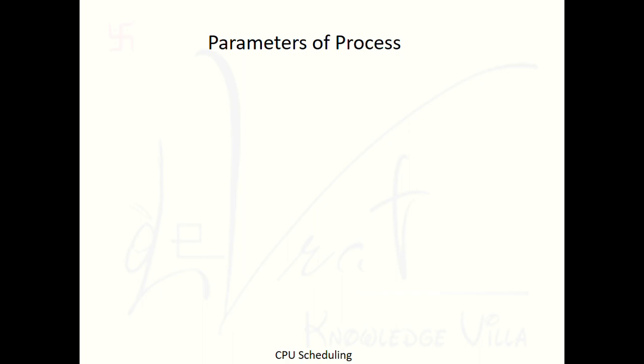Before understanding these four types of CPU scheduling algorithms, it's important to understand the parameters of processes. If you haven't watched the earlier videos on the state transition diagram, understand that first — then you will be able to fully understand CPU scheduling methods.